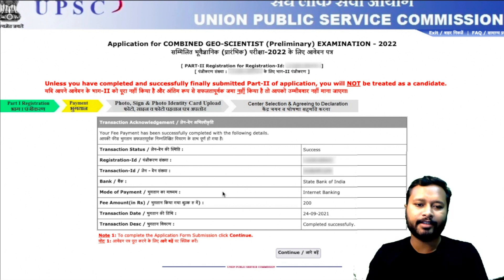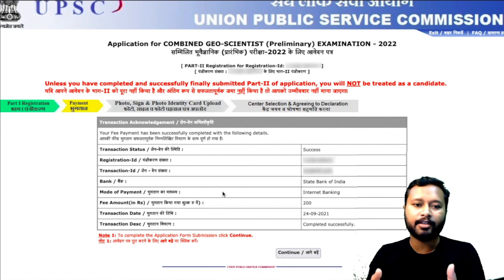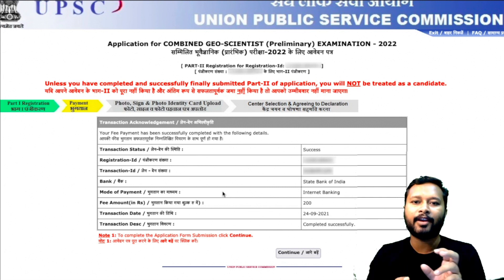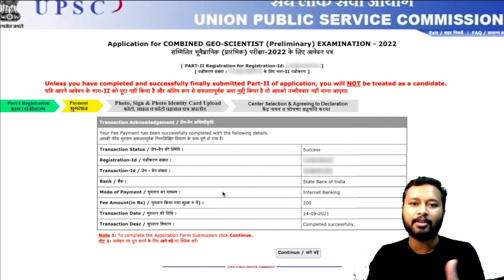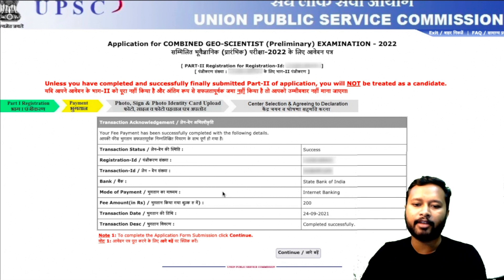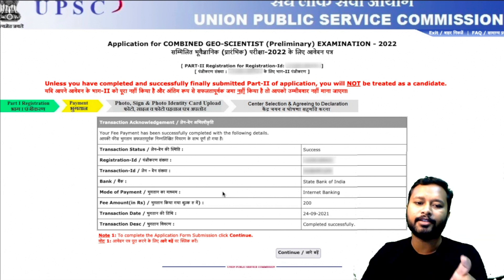Once payment is successful, you will get a success page showing 'Transaction Status: Success.' If an unsuccessful transaction appears, wait for some time — sometimes it takes time to update. If you pay via SBI, the process is seamless because UPSC has a collaboration with SBI. The page will show how much you paid, when you paid, and whether it was successful. You can take a screenshot of this page for your correspondence.